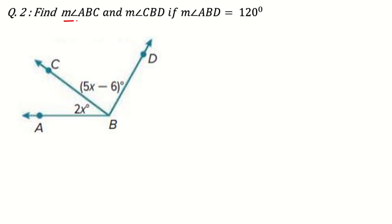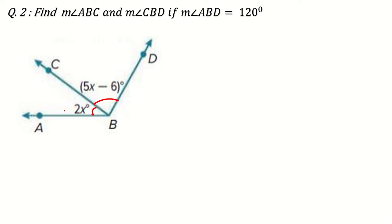The question asks: find the measure of angle ABC — as I've told you, whatever letter is in the center, that is the angle you need to find. So we have to find this total angle and also the measure of angle CBD — this smaller angle. If the measure of angle ABD is 120 degrees, we need to find both angle ABC and angle CBD.